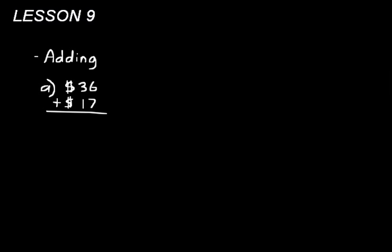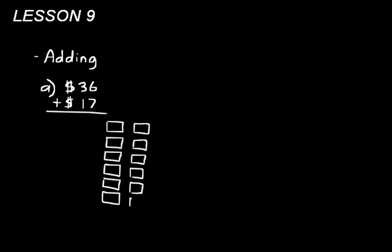We see that we have six ones and we need to add seven ones to that. So let's put some rectangles down. Two, three, four, five, six. And then we need to add seven ones to that. One, two, three, four, five, six, seven. Now that equals thirteen ones, right?